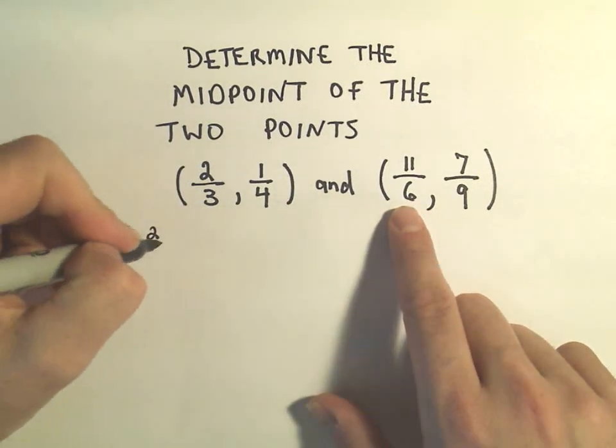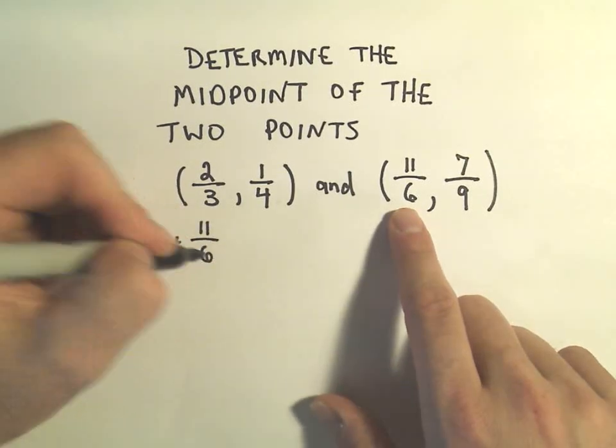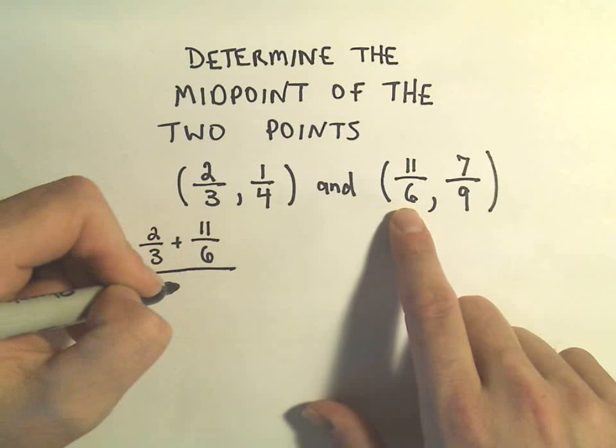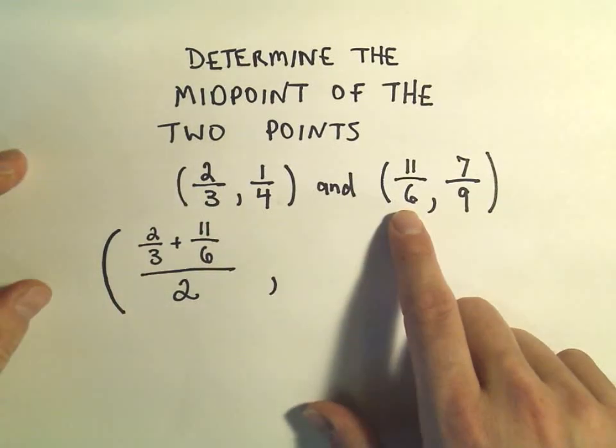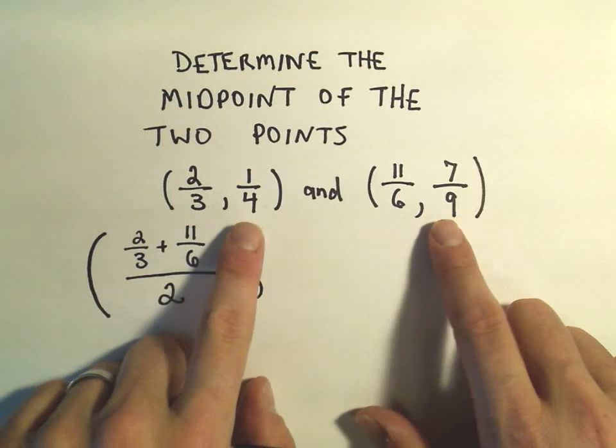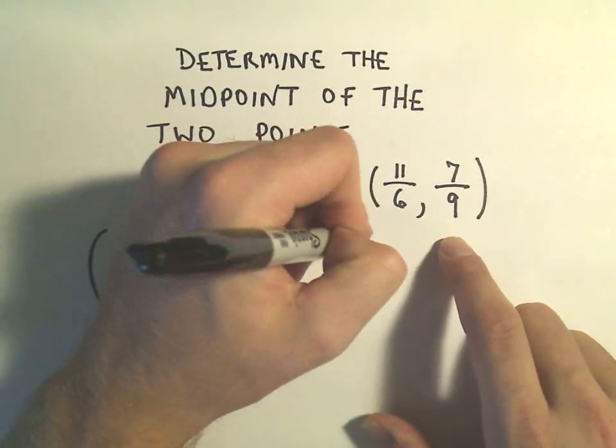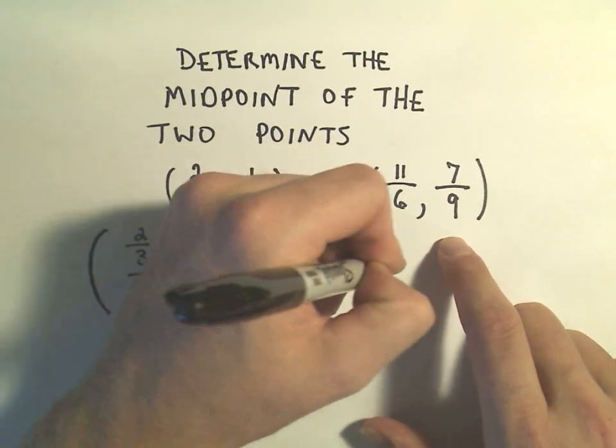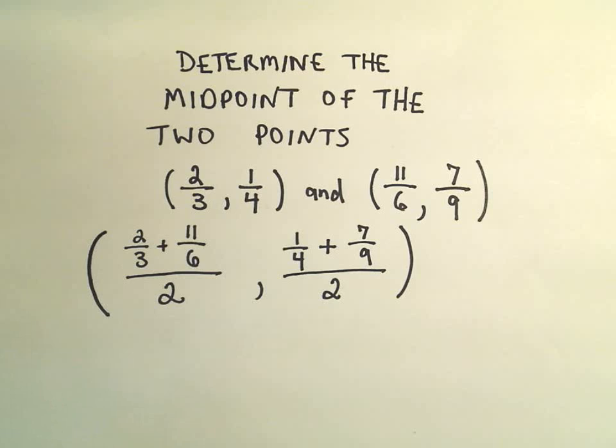We have to take two-thirds, we add to that the other x coordinate, which is 11 sixths, and then we divide all of that by 2. To get the midpoint in regards to the y coordinates, we just take one-fourth, add to that 7 over 9, and again we divide all that by 2. So technically that's the midpoint, but we're going to want to simplify this a little bit, try to clean it up.